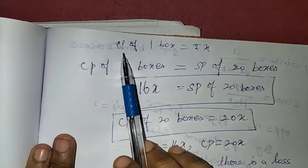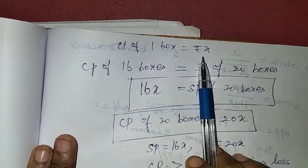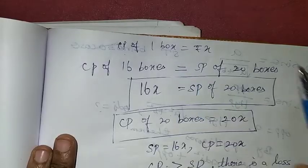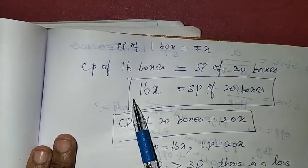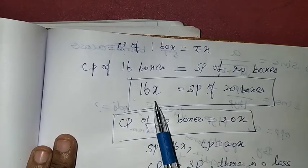If you want to verify: the cost price of 1 box is x, and the selling price of 1 box can be derived from the given ratio as 16x divided by 20.